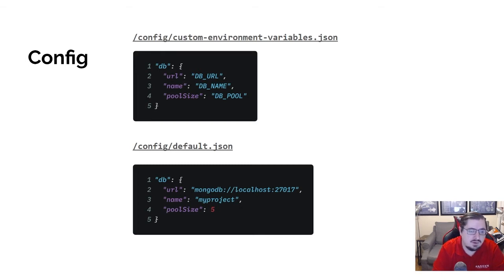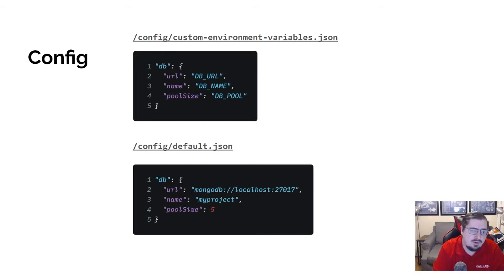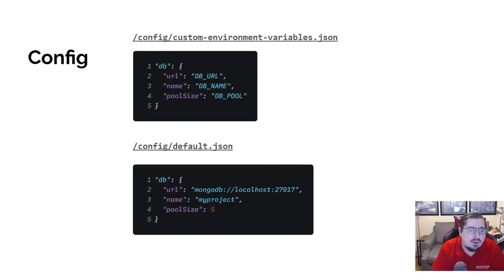If you look at how it was previously with MySQL, you saw that there were quite a few different pieces to set — the hostname, the port, the username and the password. But with MongoDB, those are all together in the URL, which is going to reduce the number of environment variables and configuration options. The URL I'm going to point to the environment variable DB_URL, the name of the database to DB_NAME, and the pool size to DB_POOL.